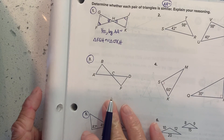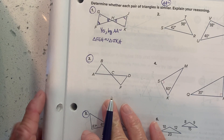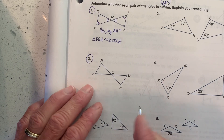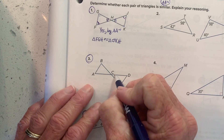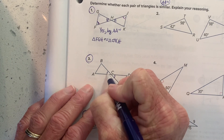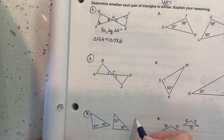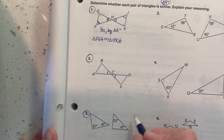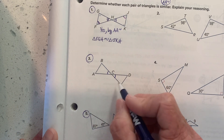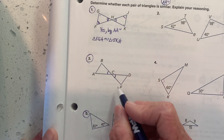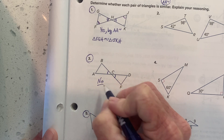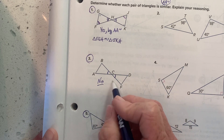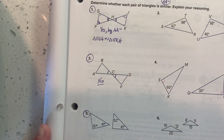For number three — they look similar, almost congruent. I do know those angles are congruent, but there's nothing else I know for sure; there are no parallel lines marked or anything like that. So no, there's not enough information to say for sure.